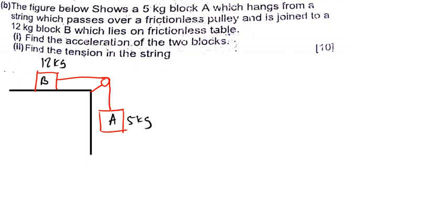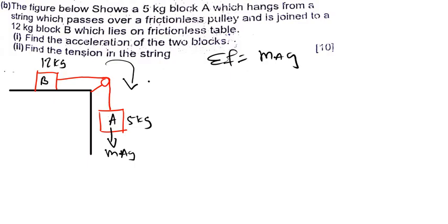Now we have the diagram. The first part asks us to find the acceleration of the two blocks, and then we'll find the tension in the string using two methods. For this system to move in this direction, it is because of the weight of block A. Block A has the weight MAG. The summation of forces that makes the whole system move - since there is no friction - is just the weight MAG, the weight of block A.